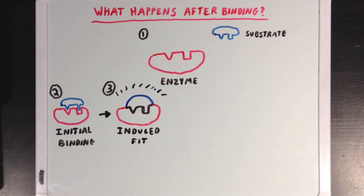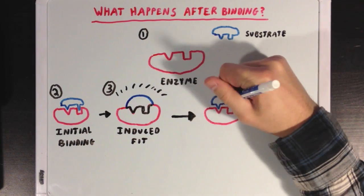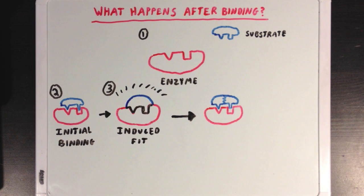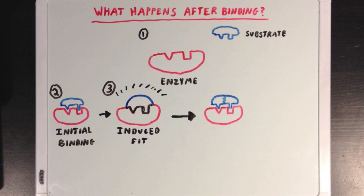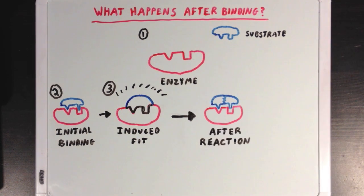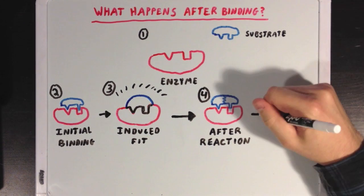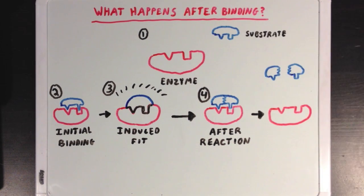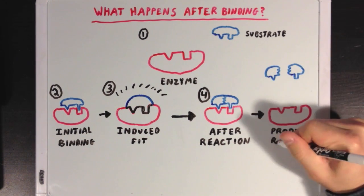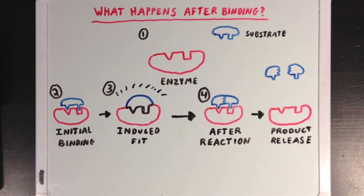Our next stage, stage 4, occurs after the reaction is completed, and the binding becomes similar to what it was in stage 2. The difference is that the substrate has changed — in this reaction the enzyme is cutting the substrate into two parts, so now those two parts have become separated. Finally, in stage 5, the products of the reaction have been released from the enzyme, and our enzyme is back in the same state it was in at stage 1.